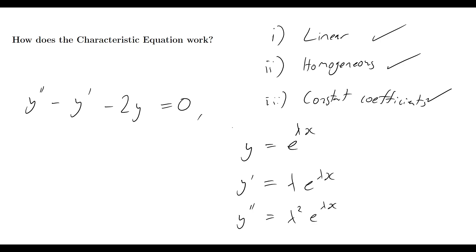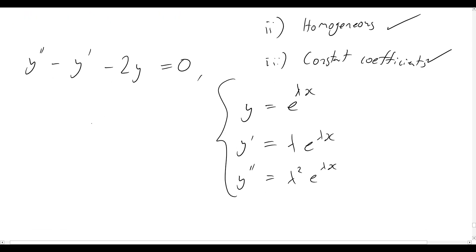Now what we're going to do is we're just going to rewrite this problem in terms of these proposed functions for y and y's derivatives. So let's see what this turns into now. So y double prime, we know we rewrite that as lambda squared e to the lambda x minus,